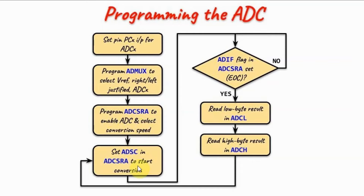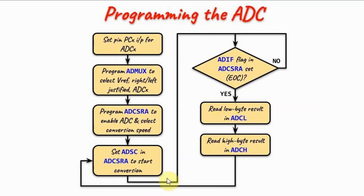Then we start the conversion and check the status of the interrupt flag. When the conversion is done, we read the low byte result stored in the data register low, and then the high byte result stored in data register high. It is very important to read the low byte first and then the high byte. Then we start another conversion and the process continues.